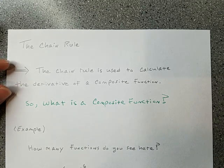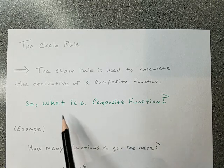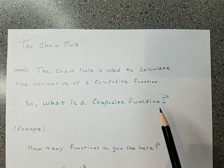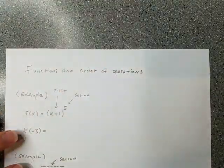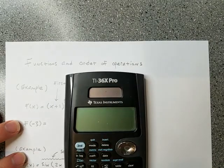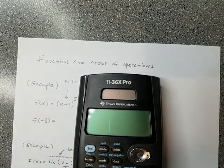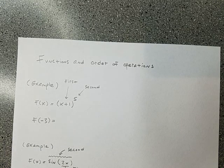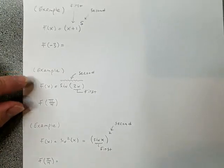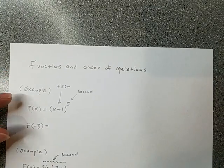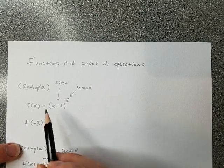The chain rule is used to calculate the derivative of a composite function. To learn how it works, we need to know what a composite function is. I'm worried that people depend so much on calculators that they don't really know what they're doing — they just press buttons and write the number down, and lose sight of the fact that in these functions there is an order of operations.